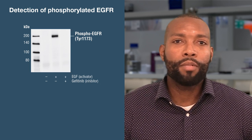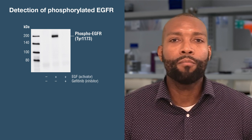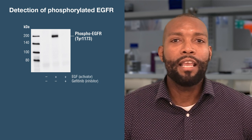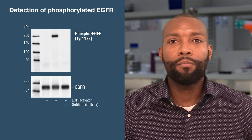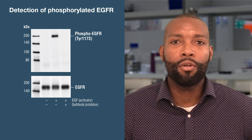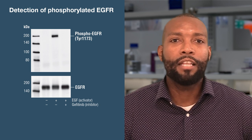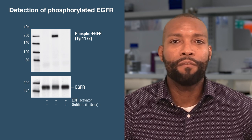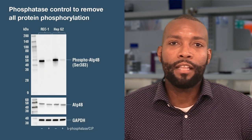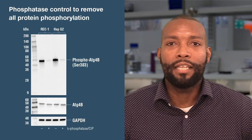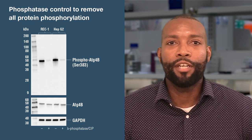For Western blots using phosphospecific antibodies, use stripping buffer to remove antibodies from the membrane and then reprobe it with an antibody that recognizes total protein. This important control is used to confirm protein degradation or changes in expression are not occurring and supports the interpretation of the phospho-EGFR blot.